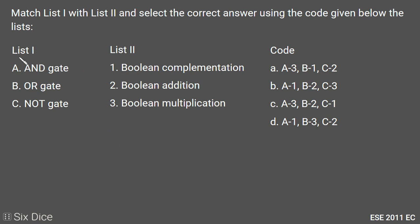In this question we need to match List 1's options to List 2. List 1 has three gates: AND gate, OR gate, and NOT gate.